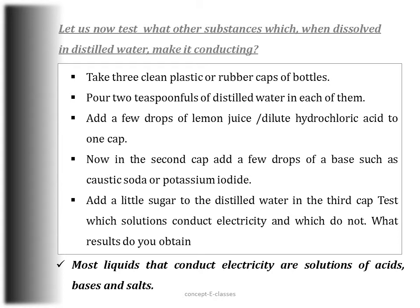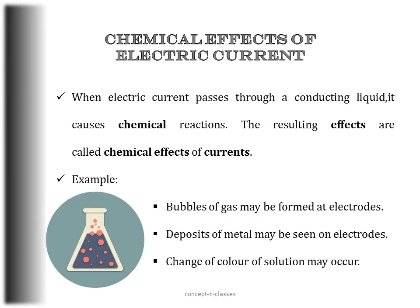When an electric current flows through a conducting solution, does it produce any effect on the solution? The next topic of this chapter is the chemical effects of electric current. These chemical effects can be observed only when electric current passes through liquids. When electric current passes through a conducting liquid it causes chemical reactions — bubbles of gas may be formed, deposits of metals may be seen on electrodes, or a change of color of solution may occur.